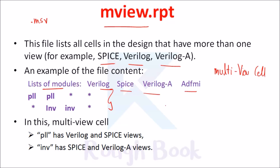Usually the mvue.rpt file is a report file which contains all the list of cells in the design which have more than one view.